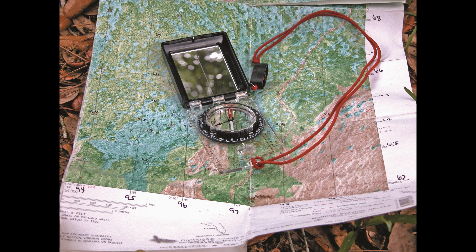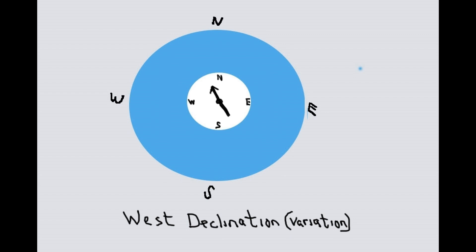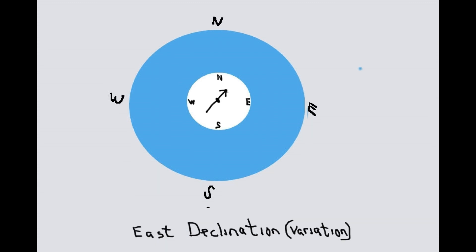To start with, let's see how a compass works. A compass needle aligns itself with the earth's magnetic field, causing one end of the needle to point in a northerly direction. But normally, that end of the needle doesn't point to exactly true north — it points some bit to the west of north, or some bit to the east of north. When the compass needle points to the west of north, that's called west declination, or west variation. And when the compass needle points to the east of north, that's called east declination, or east variation.